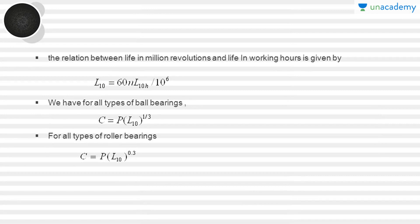The relation between the life in million revolutions and the real life in working hours is given by L10 equals 60·N·L10H divided by 10 to the power of 6, where N is the speed of the shaft and L10H is the life of the bearing in working hours. So if we get the life of the bearing in hours, we can convert it into million revolutions using this relation.